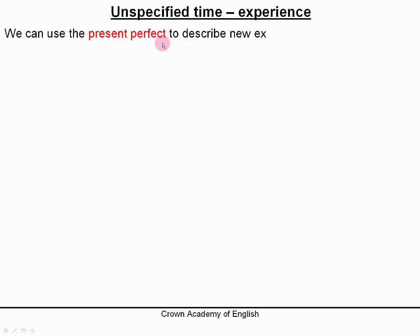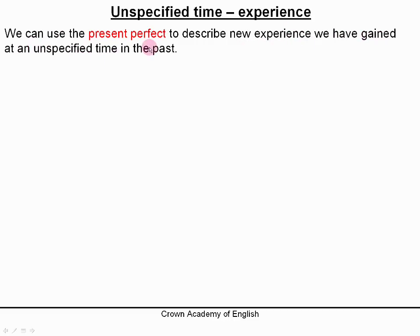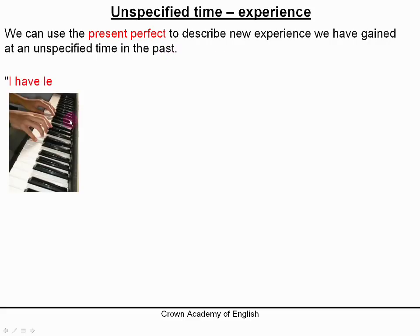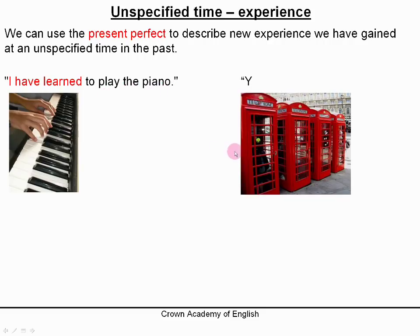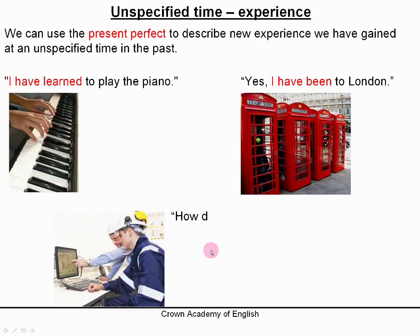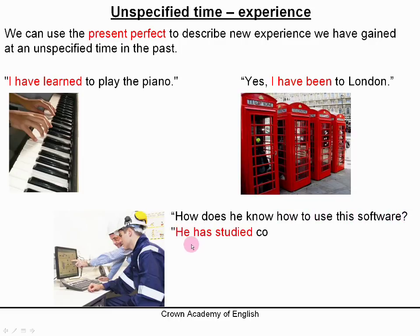We can use the present perfect to describe new experiences we have gained at an unspecified time in the past. Example: 'I have learned to play the piano.' 'Yes, I have been to London.' 'How does he know how to use this software?' — 'Well, he has studied computing.' These three examples show the present perfect used to describe experience that we have acquired in the past.